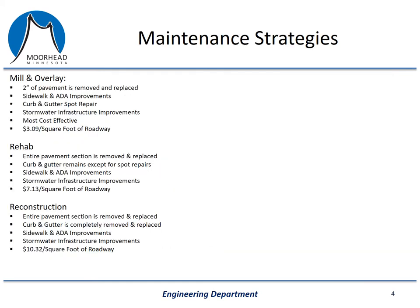Before I go into more depth on the pavement condition index, I'd like to explain the three major types of projects that we typically perform. These are what we refer to as a mill and overlay, a rehab, and a reconstruction. A mill and overlay is the simplest of the three. During a mill and overlay, we remove the top couple inches of pavement using a milling machine and then we put down a couple inches of new bituminous or asphalt pavement. We are also required by law to update sidewalk and pedestrian ramps at intersections to make them ADA compliant, and we will replace certain sections of curb and gutter if it isn't draining or is significantly damaged. A mill and overlay is the most cost-effective project we have, and on average will cost a little over $3 per square foot of roadway.